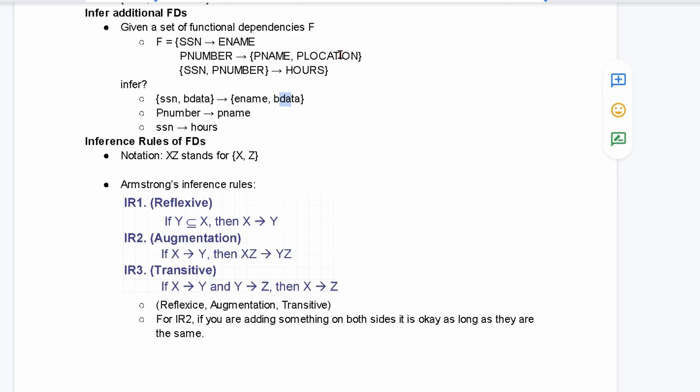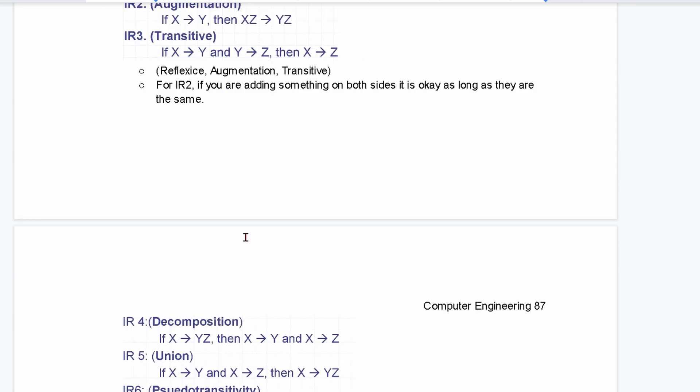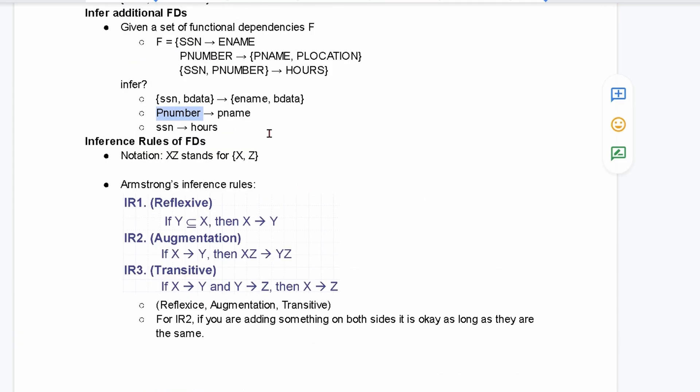Let's look at this next one. We have our P number, and it goes to P name and P location. Well, we can split this if we want to. If we have a P number going to our P name, what is this going to be? Well, we are splitting two right here. It is going to look like part of a decomposition, because we're splitting them.